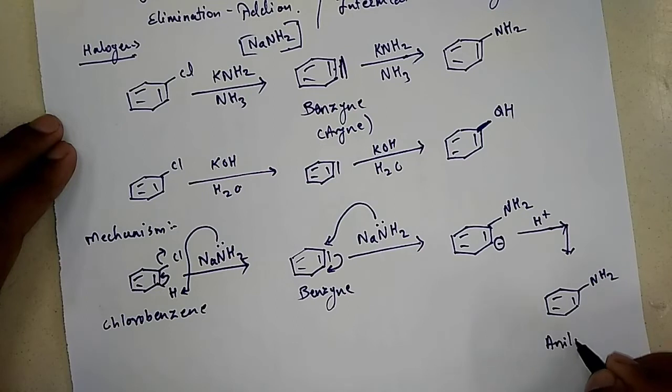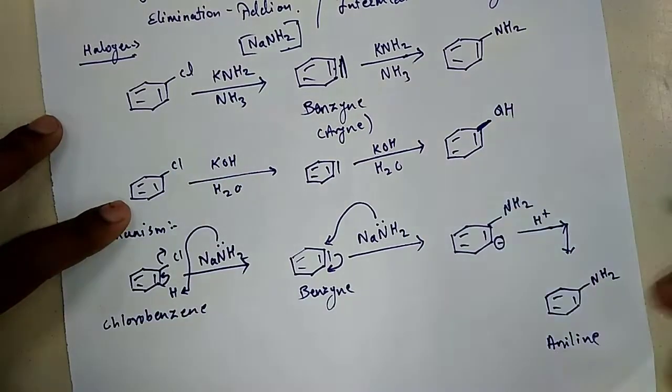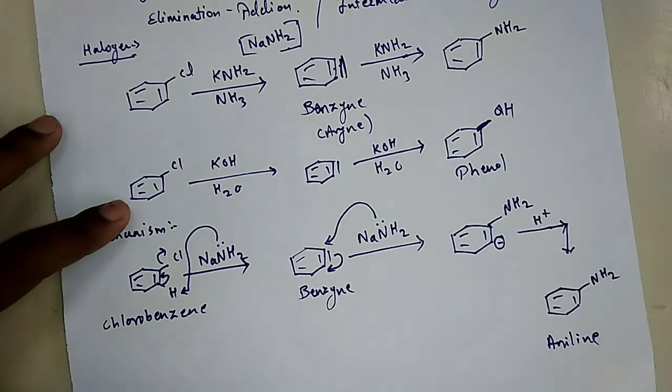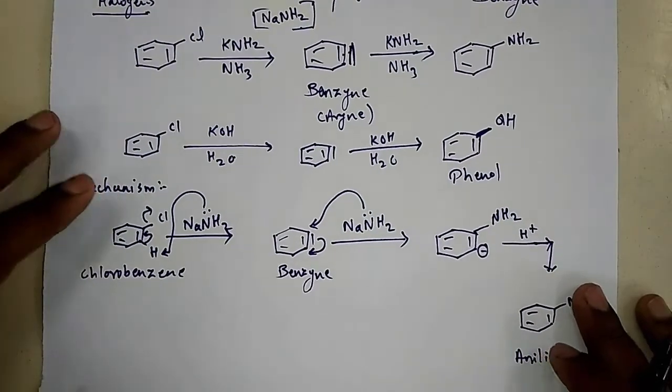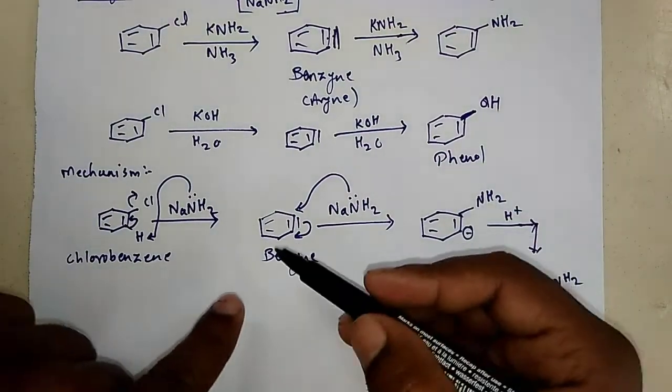From the chlorobenzene, and in above reaction it was a phenol. From chlorobenzene, if you use KOH/H2O we get phenol. From chlorobenzene, if we use NaNH2/NH3, we'll get aniline.